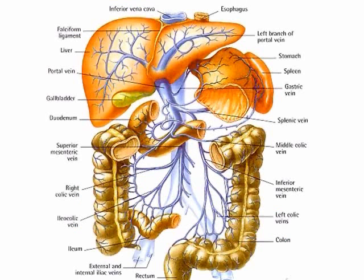Here is another picture showing the portal vein entering the liver — the right and the left portal vein. The liver takes blood from the portal vein and the hepatic artery, and the blood exits the liver from the hepatic veins and enters the inferior vena cava.